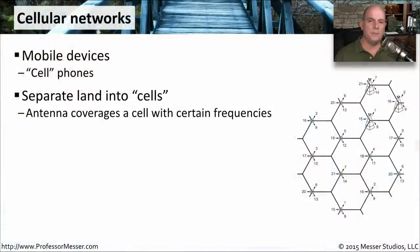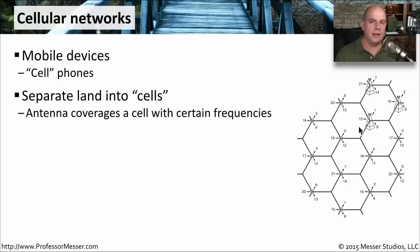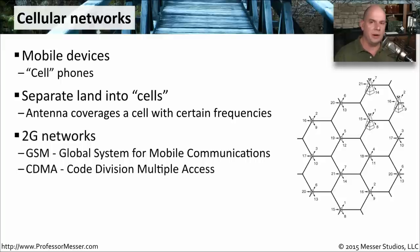We built this mobile technology over something called cellular networks. This is something we abbreviated to cell phones, and it came from this term where we separated all of the land up into separate cells. We put antennas so that we could cover an entire cell or an entire area with certain frequencies communicating over the air. We had two major networking types in the United States that we use to send this data back and forth.